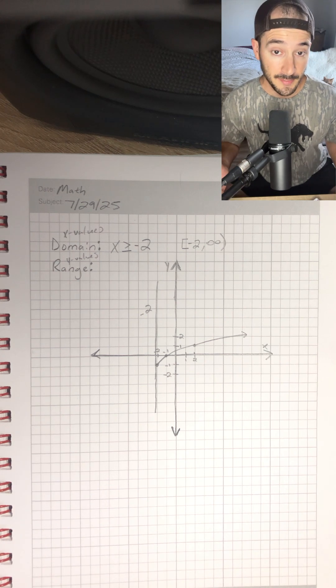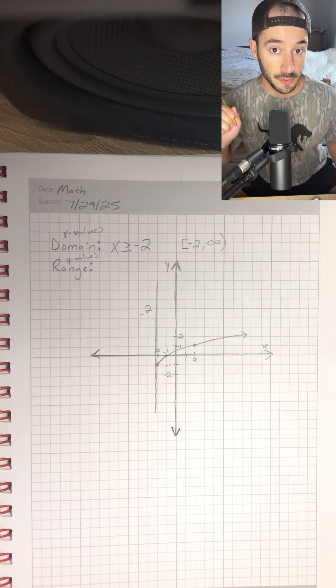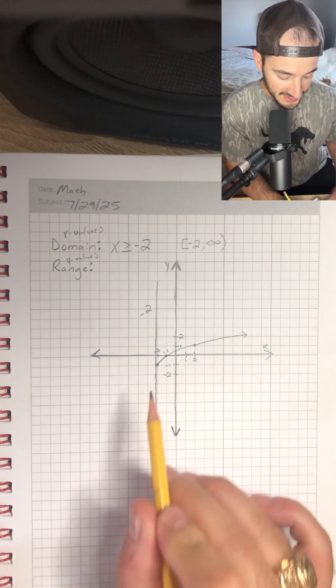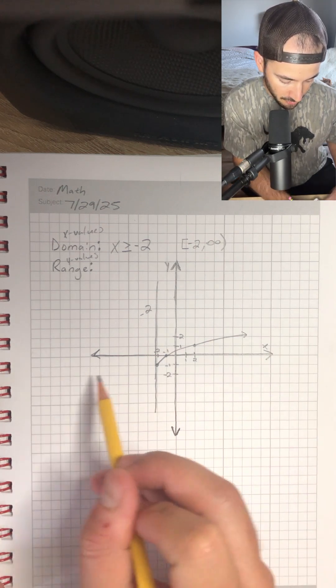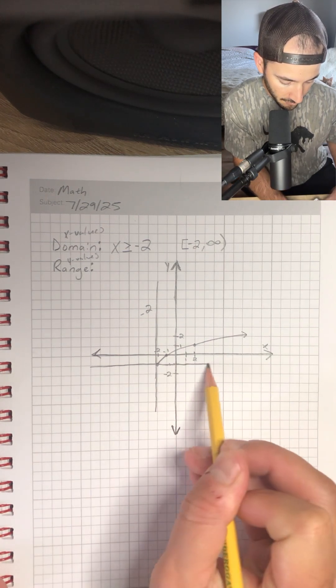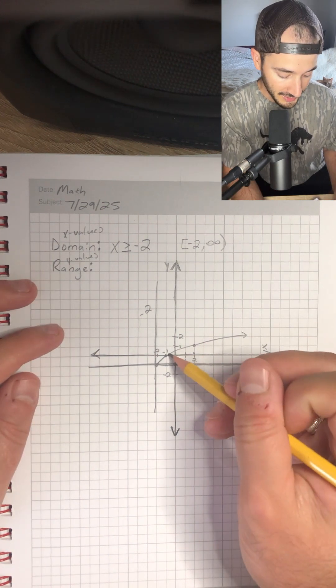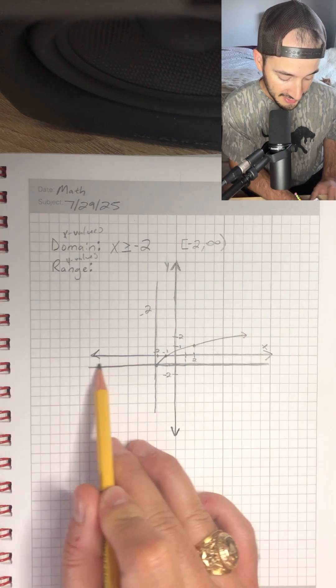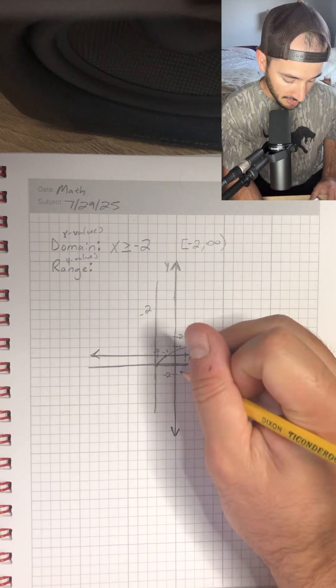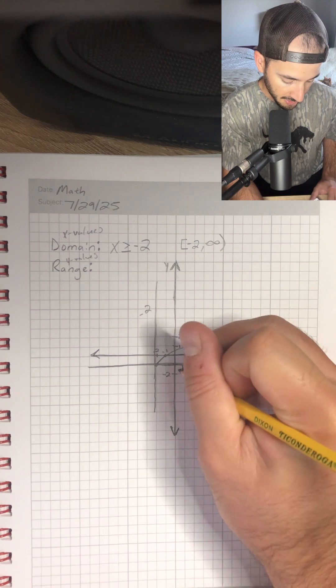Now the range is just the same thing, but we're looking up and down because we're looking at the y values. Same thing, I'm going to make my boundary where the graph doesn't go any further down. And so that's going to be like my fence or boundary that keeps this graph from going any further down the graph. And this line is even with negative 1.